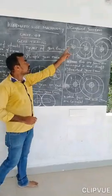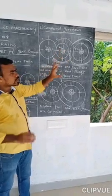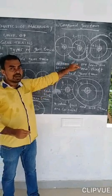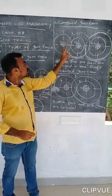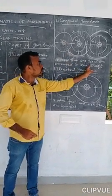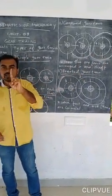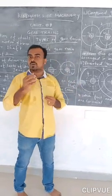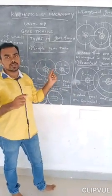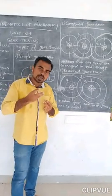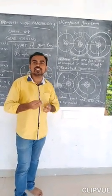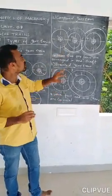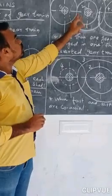The second type is the compound gear train. The compound gear train has more than one gear on one shaft — that is a little additional point. In a simple gear train one shaft has one gear, but in a compound gear train one shaft can have two or three gears. I will show the diagram with three shafts.